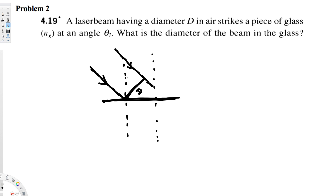The question is asking: what is the diameter of the beam in the glass? After the beam hits the glass, it's going to refract, turning a little bit inside. We call the incident angle theta_i — that's given. The angle making with the normal after refraction is the refracted angle, which we call theta_r.